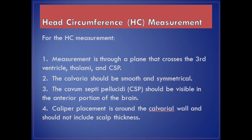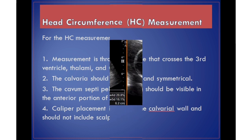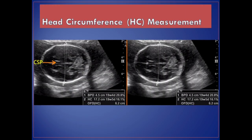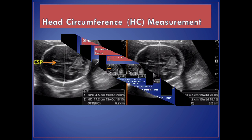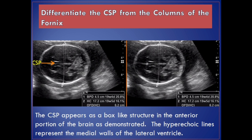Head circumference, HC, measurement. Measurement is through a plane that crosses the third ventricle, thalami, and CSP. The calvaria should be smooth and symmetrical. The cavum septi pellucidi, CSP, should be visible in the anterior portion of the brain. Caliper placement is around the calvaria wall and should not include scalp thickness. Differentiate the cavum septi pellucidi, CSP, from the columns of the fornix.